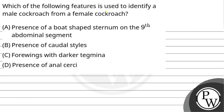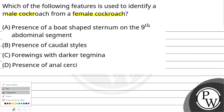Which of the following features is used to identify a male cockroach from a female cockroach? Option A, presence of a boat-shaped sternum on the 9th abdominal segment. Option B, presence of caudal styles. Option C, four wings with darker tegmina. And Option D, presence of anal cerci.